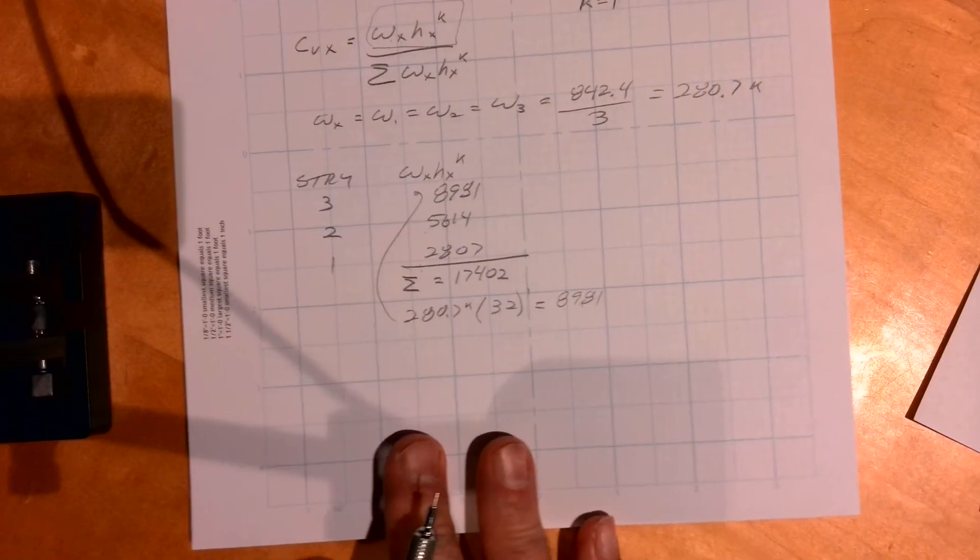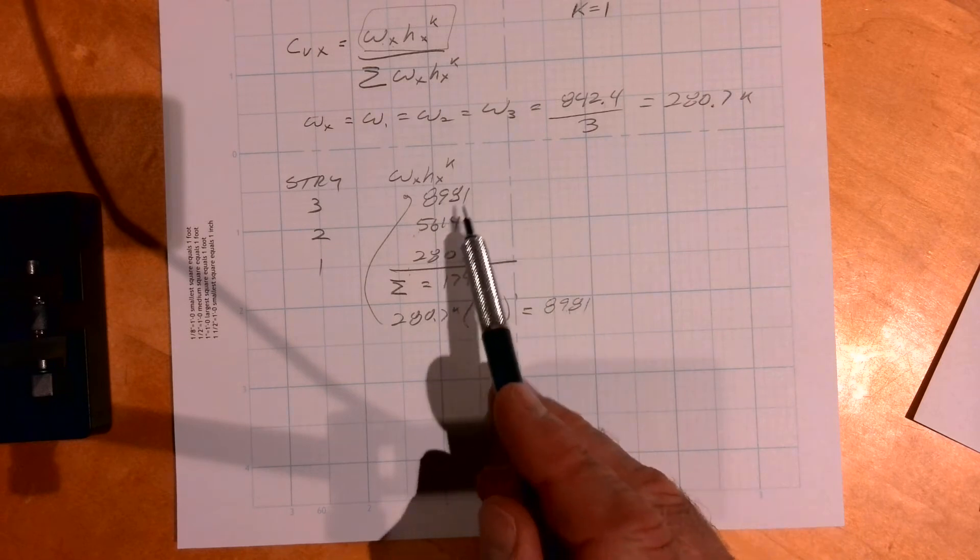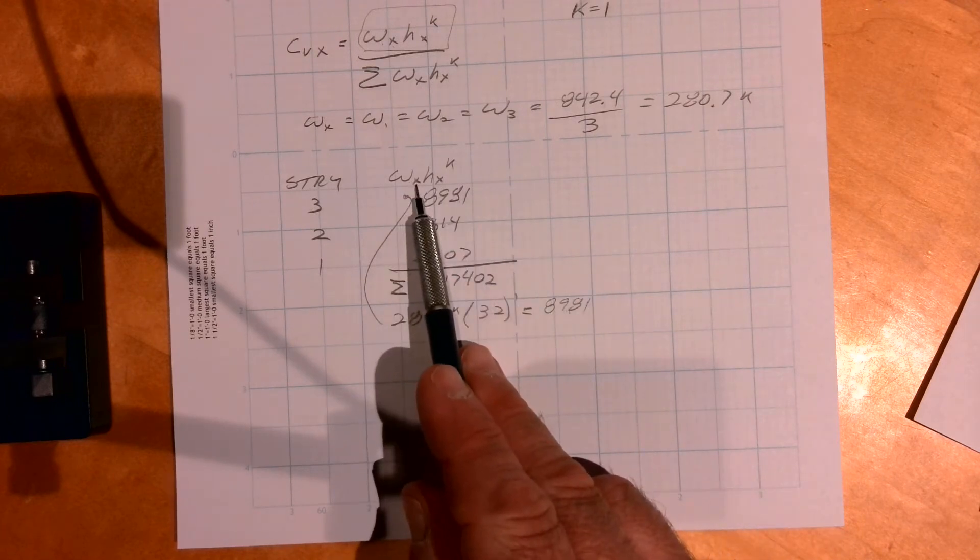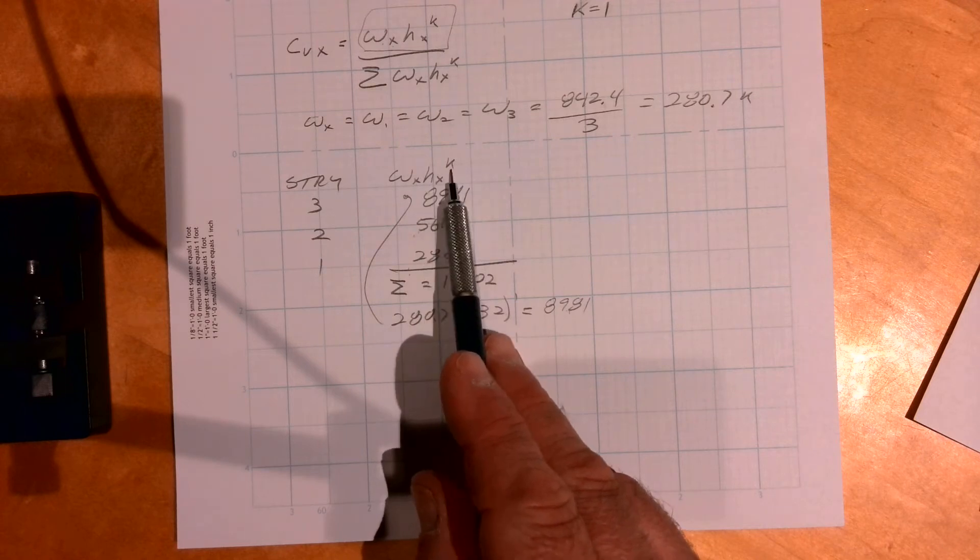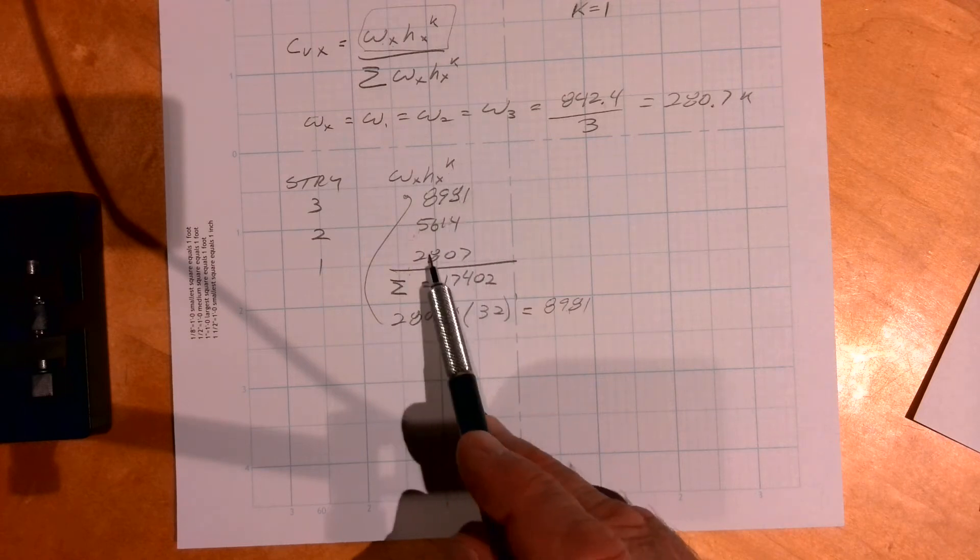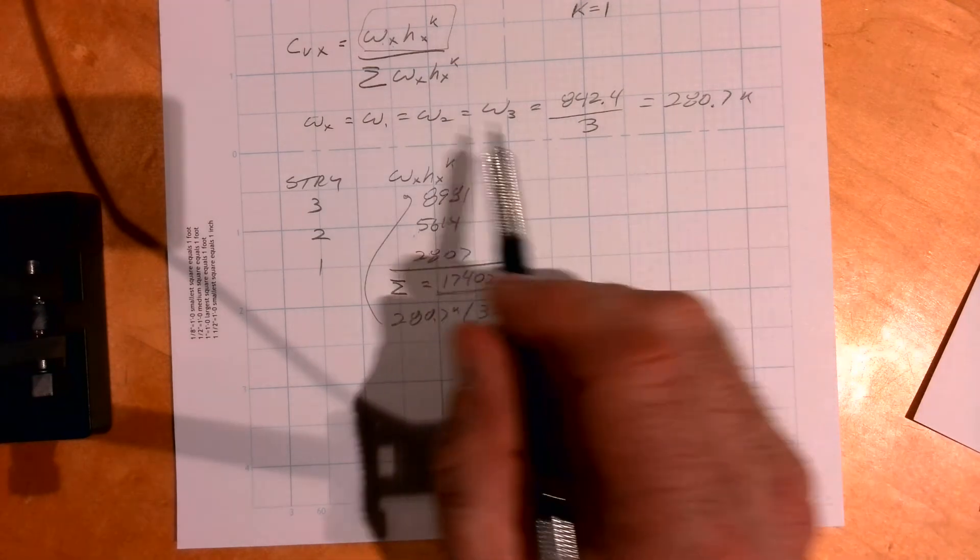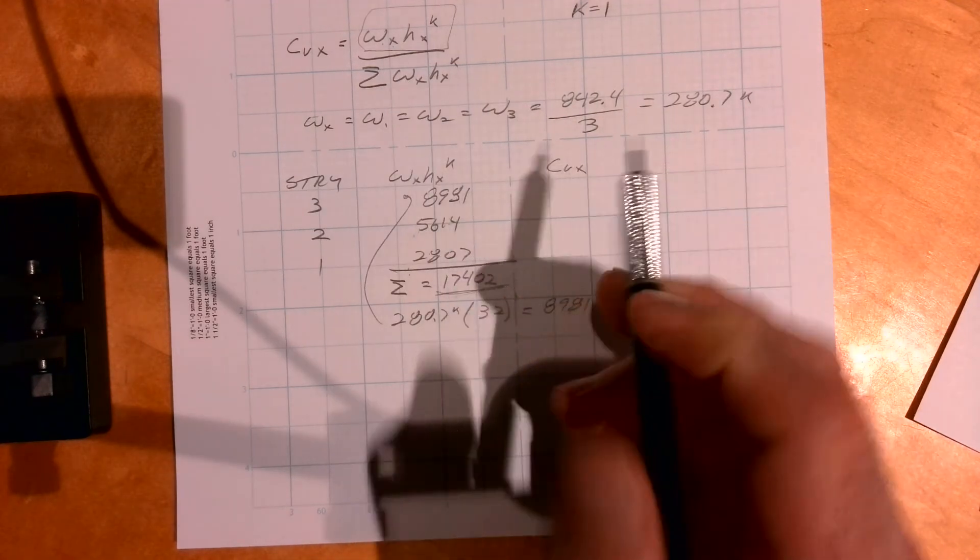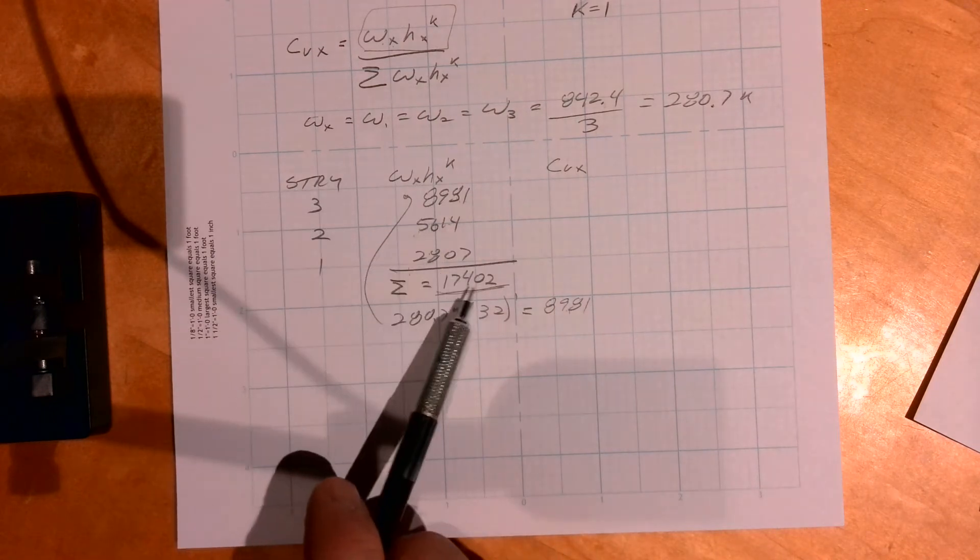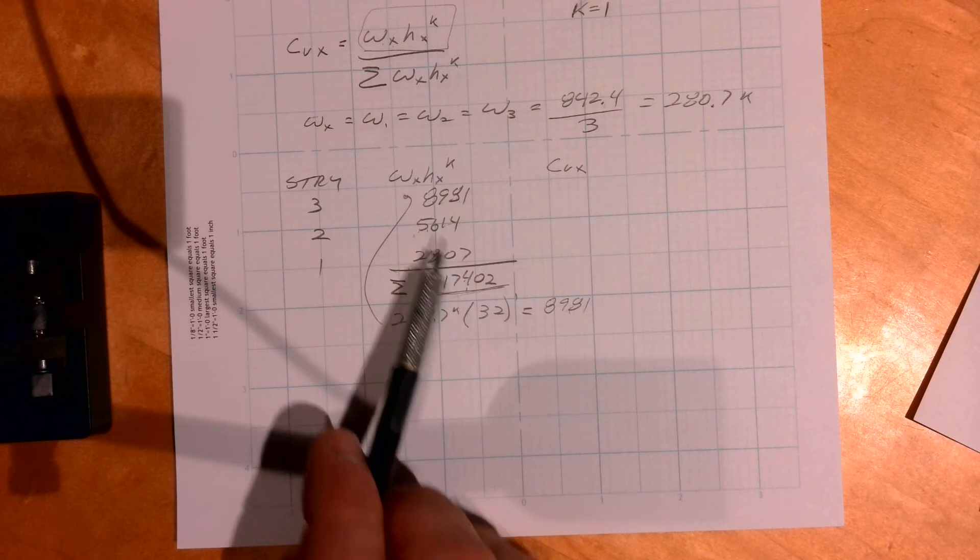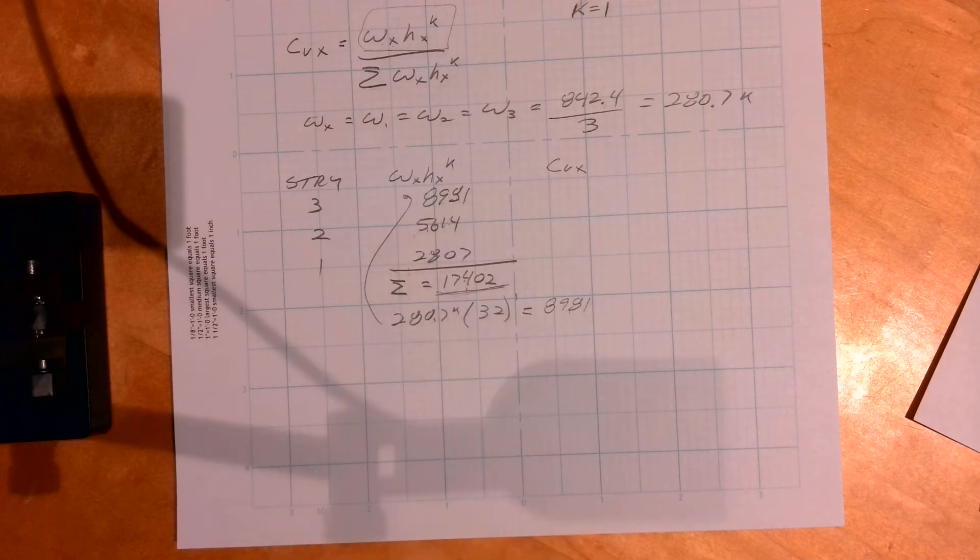Okay, so rather than bore you with those calculations, I've gone through calc w times the height to the k factor for each story, add them up, and so I get that. Now the CVx is just that number divided by this number, that number divided by that, that divided by that. So I'm going to do that quickly off screen.